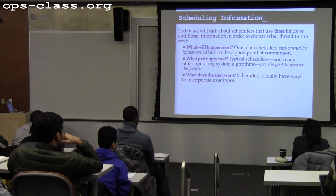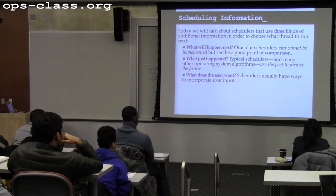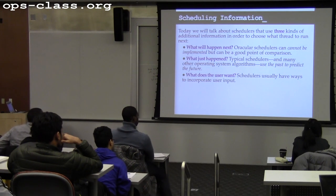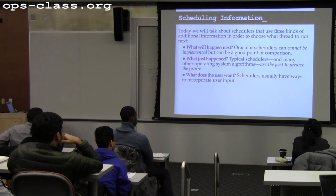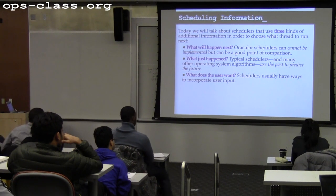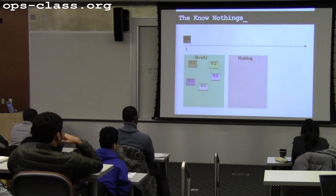Will the scheduler ever override the user? Yes — normally the user doesn't really know what they want to happen at the scheduling level. You could tell the scheduler a thread has higher priority, but the scheduler makes decisions on a continuous basis about exactly when threads run. Priorities are a good way of layering information on top of the system, but the scheduler is still in charge.